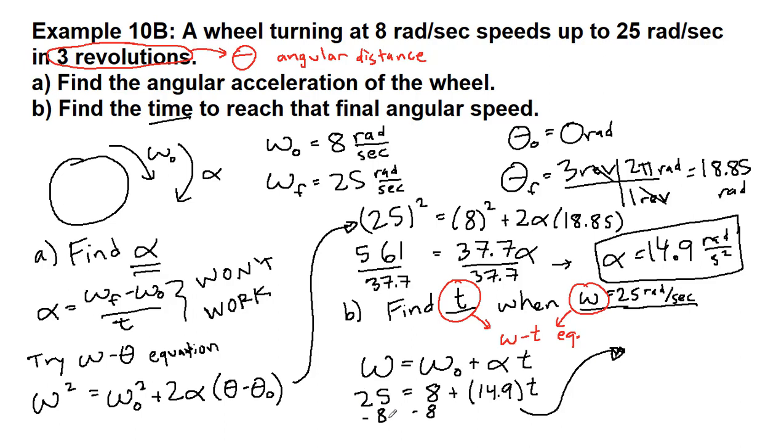I'm going to bring this over here so we've got a little more space, not at the very, very bottom. So 25 minus 8, that's 17, equals 14.9 times T. So we divide both sides by 14.9. And so we get that the time is equal to 1.14 seconds.